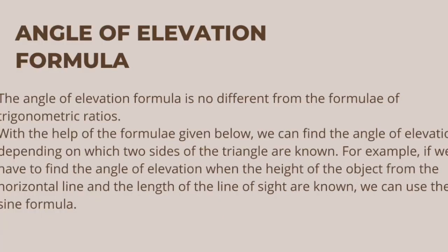The difference between angle of elevation and angle of depression: The angle of elevation and the angle of depression are opposites of each other. In an angle of elevation, the object is placed above the observer, while in the case of the angle of depression, it is placed below the observer. If you are standing at your terrace and looking at the sun, then the angle of elevation will be formed. On the other hand, if you look at a dog standing on the road from your terrace, then the angle of depression will be formed. In both cases, we use trigonometry angles to find the height and the distances.